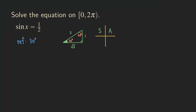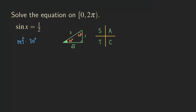From this chart: all functions are positive in the first quadrant, sine and cosecant are positive in the second quadrant, tangent and cotangent are positive in the third quadrant, and cosine and secant are positive in the fourth quadrant. So sine is positive in the first and second quadrants, and our angle must belong to both of those quadrants.